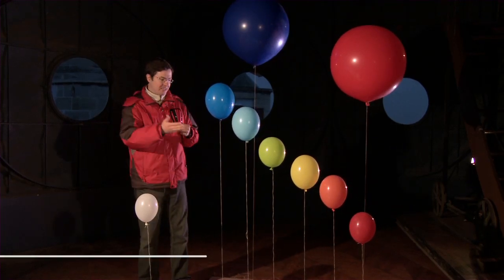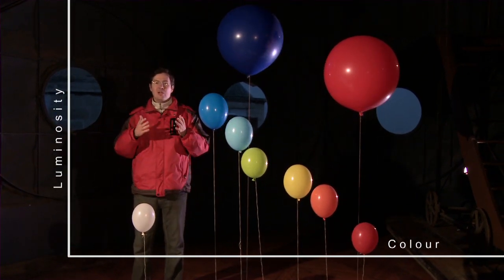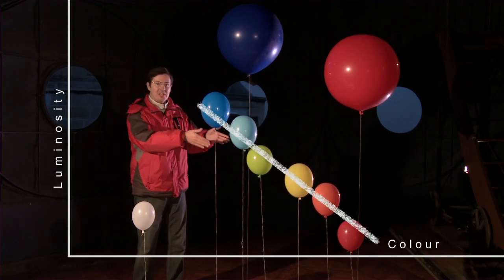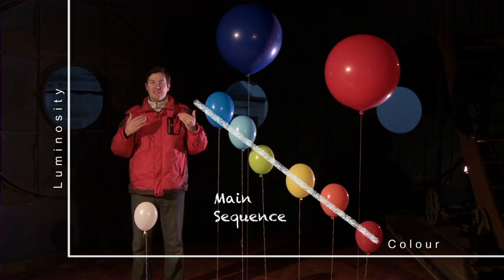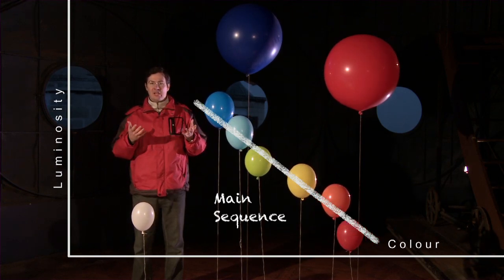If we put the stars in a graph plotting color versus luminosity, almost all stars will fall in a diagonal, called the main sequence. Once nuclear fusion reactions are triggered in its center, the star is in the main sequence.